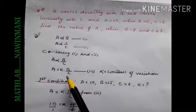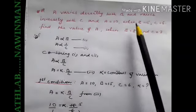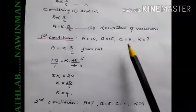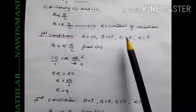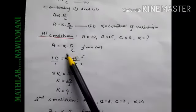Now first condition: A=10, B=15, C=6. All the three values are given. From these three values we will find the value of K. Putting in equation number 3, so K=4.